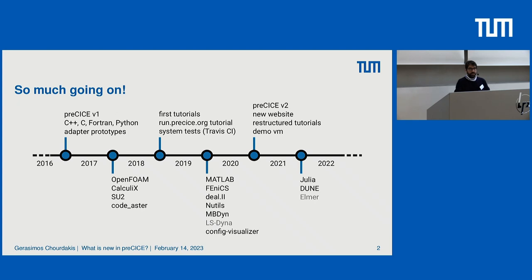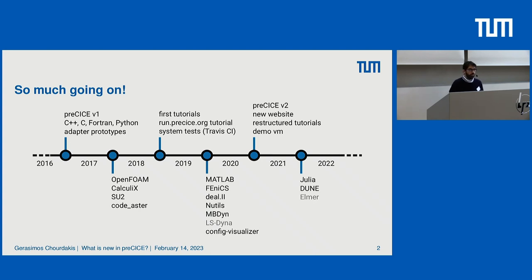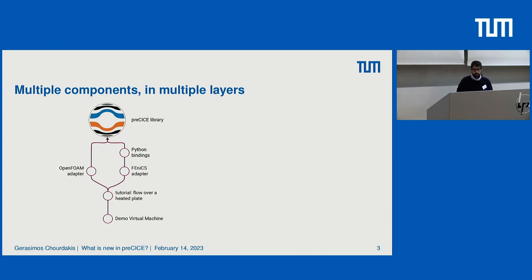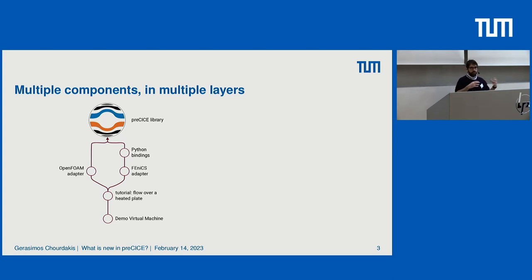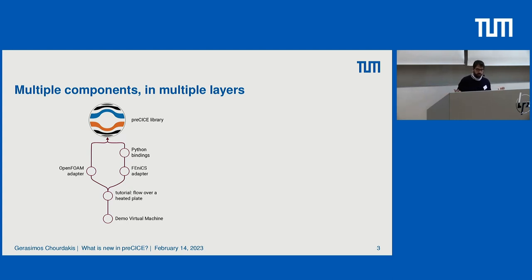We got a new website that seems quite useful, restructured tutorials so you can contribute more easily, and created the virtual machine some of you used yesterday. We also got Julia bindings being further developed. More and more codes are being added. Today we don't only have a library requiring a developer — we have multiple other components making it easy for end users to start sketching up a simulation.